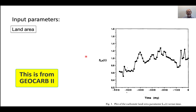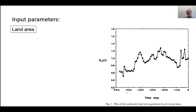Here's their record of land area through time from 570 million years ago to zero. This is basically a sea level curve. Where sea level is low, land area is high, and where sea level is high, land area is low. That's how they get at land area.